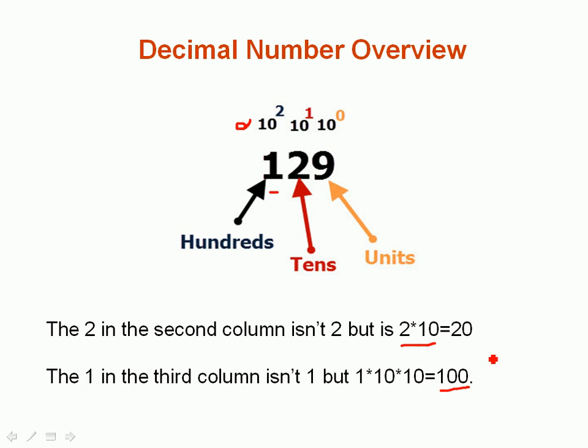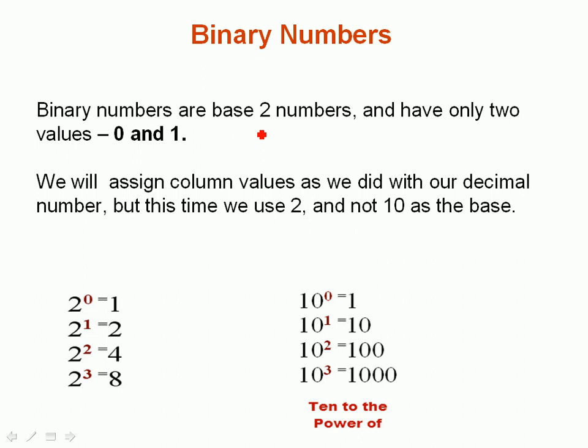Okay, so we're going to use this same concept when we talk about binary numbers. Binary numbers use a base 2, and they only have two values, nice and simple, 0 and 1, and usually it's represented in a computer by on and off. And we can assign column values like we did with our decimal, but this time we have to use 2 and not 10 as the base. So instead of writing 10 to the power 0, which is the units, we write 2 to the power 0, which is the units. 10 to the power 1, which is the tens, this becomes 2 to the power 1, which is 2. 10 to the 2, which is 100, becomes 2 to the 2, which is 4, and 10 to the 3, which is 1,000, becomes 2 to the 3, which is 8.